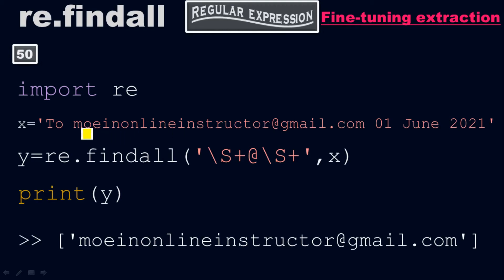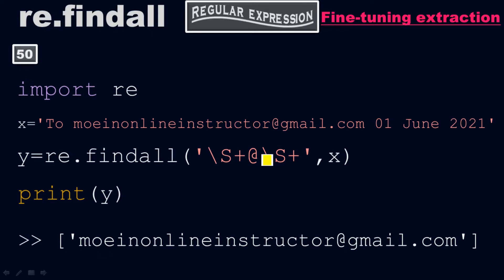Therefore, we extract this part from here up to here, which will be the output. We got the output, which is the complete email address: moinonlineinstructor@gmail.com. So we have extracted the whole email address in a fine way. This process of the regular expression is called fine-tuning extraction. I hope you got it.